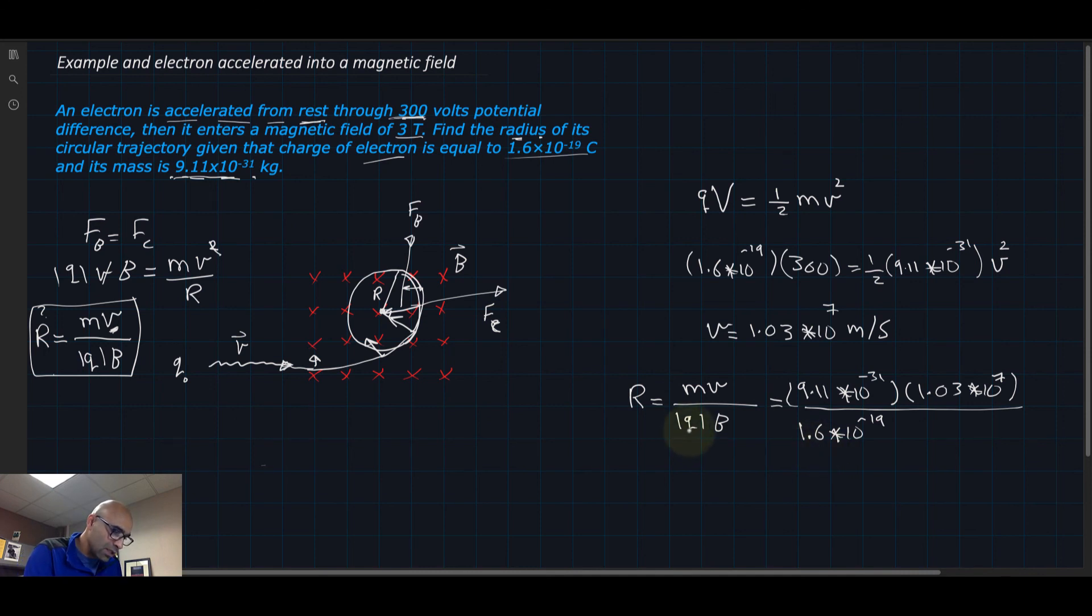Times the magnetic field, which is 3. And 3 Tesla is a huge magnetic field. Running the calculations on the calculator, we get that R equals 1.95 times 10^-5 meters. That's it for this problem. Thank you very much.